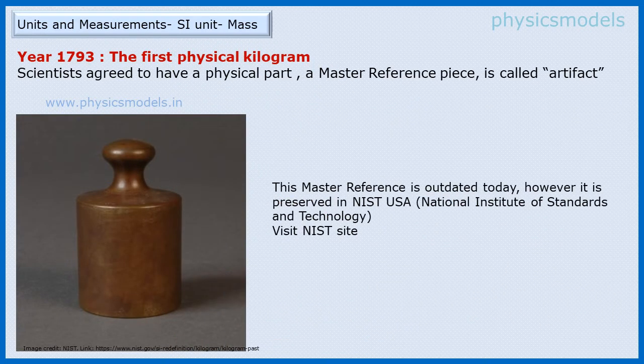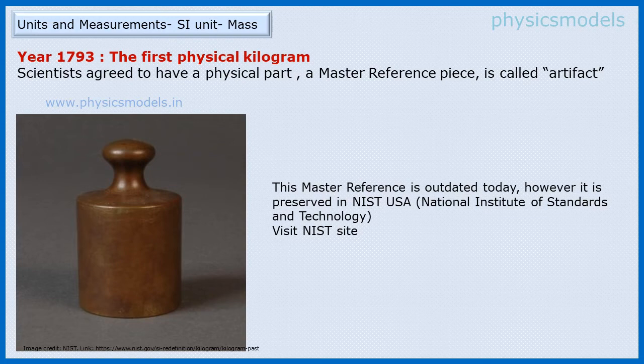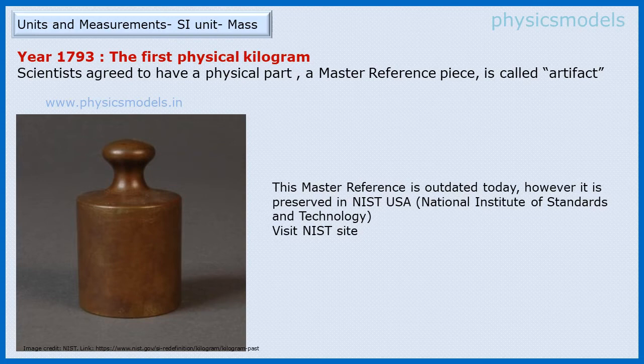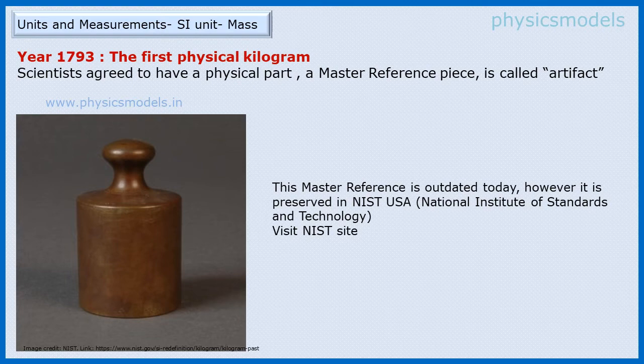In 1793, scientists agreed to have the first physical kilogram mass. This became the first prototype, and all such physical prototypes are called artifacts in scientific literature. This piece had a mass of exactly one kilogram. It went out of fashion many years later but is still kept as a museum piece in the NIST USA.